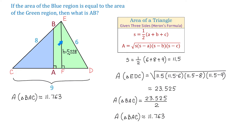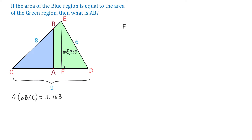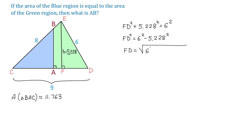Now to find the area of triangle EFC, first we need to find the length FD, and for this we will use the Pythagorean theorem. We write that FD squared plus 5.228 squared equals the hypotenuse 6 squared. Then we isolate FD squared, which equals 6 squared minus 5.228 squared. Taking the square root, FD is approximately 2.944.